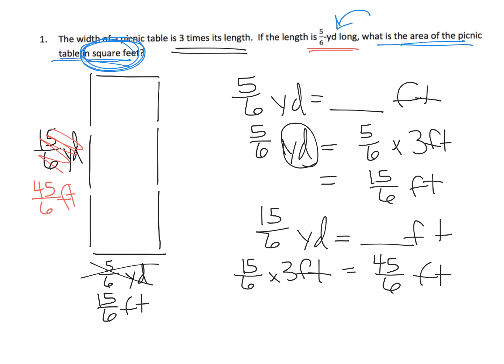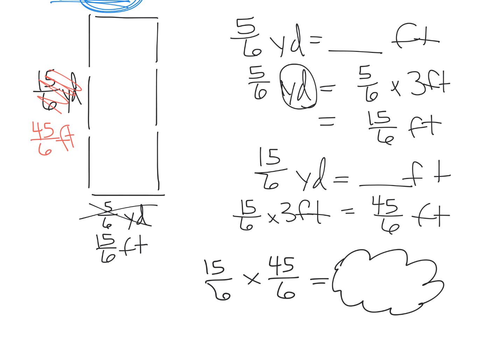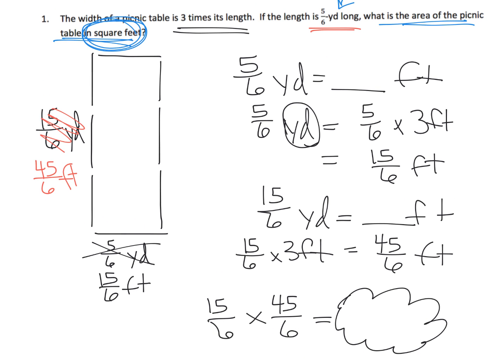Now we want to find the area. We are going to multiply fifteen-sixths by forty-five-sixths to get our answer. You're going to have to do some converting of the improper fraction into a mixed number. You multiply fifteen times forty-five, and six times six gives you thirty-six. Then do some division to turn that number into a mixed number. I'm not going to actually do all the work — I'm just going to map out that strategy. The key thing is converting these yards into feet.